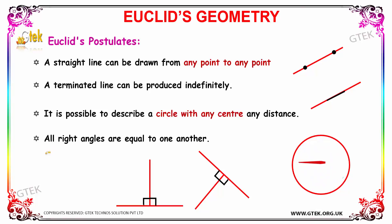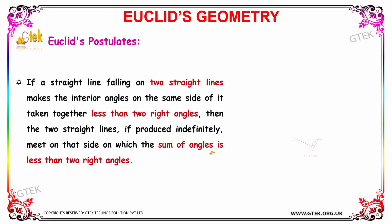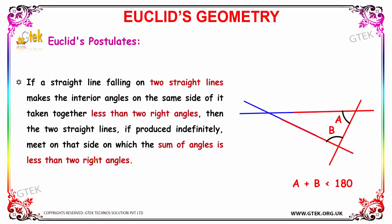The third postulate states it is possible to describe a circle with any centre at any distance. The fourth postulate states that all right angles are equal to one another. The fifth postulate states that if a straight line falling on two straight lines makes the interior angles on the same side taken together less than two right angles, then the two straight lines, if produced indefinitely, meet on that side where the sum of angles is less than two right angles.